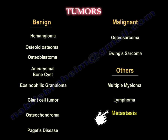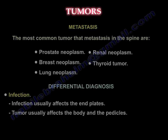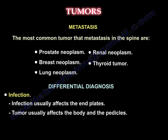Metastasis: The most common tumors that metastasize to the spine are prostate, renal, thyroid, breast, and lung. The differential diagnosis is infection. Infection usually affects the end plates, whereas tumor usually affects the body and the pedicles.